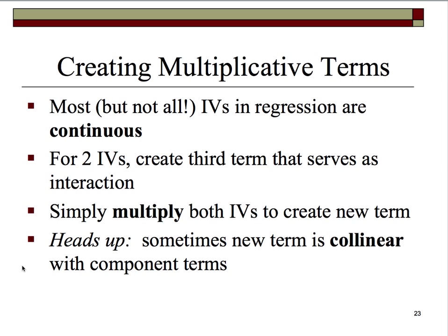For two independent variables, we'll simply create some third term that serves as the interaction — we just go in and multiply both IVs. This creates a new variable in our dataset: IV1 times IV2. The problem is that sometimes a new multiplicative term is collinear with one or both of its component parts.